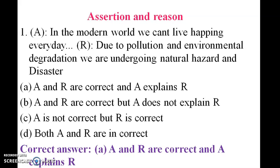Assertion: In the modern world we cannot live happily every day. Reason: Due to pollution and environmental degradation we are undergoing natural hazards and disasters. Both A and R are correct and A explains R.